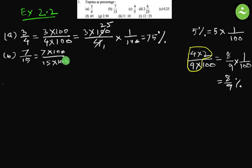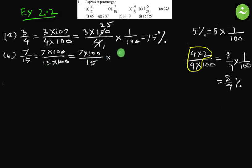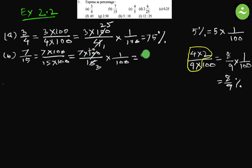Part b: 7 by 15. We separate 1 by 100 from the rest. It equals 7 multiplied by 100 divided by 15, then multiplied by 1 by 100. We are just separating 1 by 100. Now simplify: divide both by 5 — 100 divided by 5 is 20, and 15 divided by 5 is 3. So we get 7 times 20 is 140 by 3.